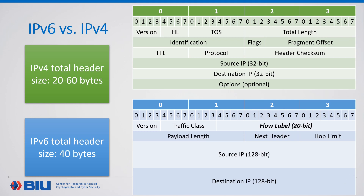Here is a comparison between IPv4 and IPv6 headers. We can see that IPv6 has a constant size header, and some of the optional headers of IPv4 were moved to the IPv6 extension headers, and are not part of the IPv6 header. IPv6 has also introduced a new 20-bit field named FlowLabel, which is the focus of our work.